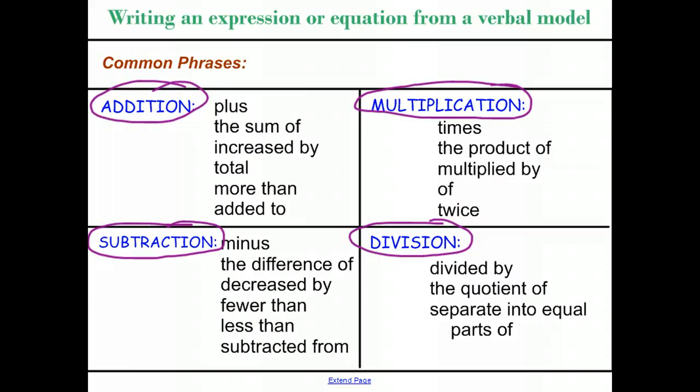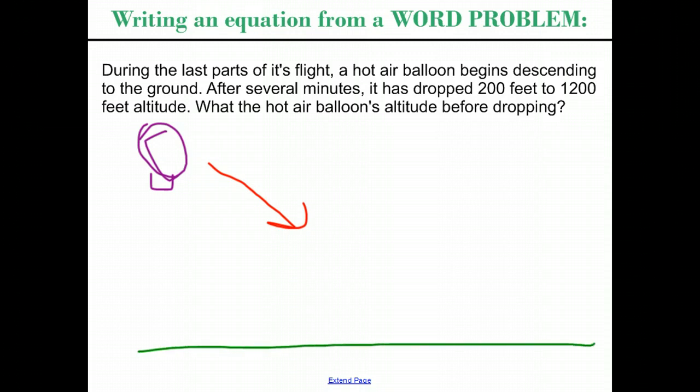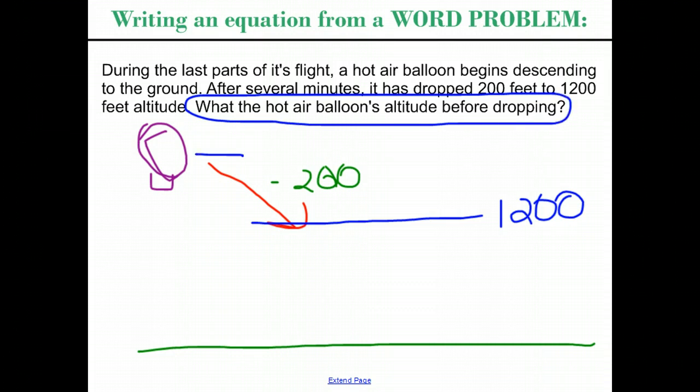But writing from verbal models is one thing. More often, what we're going to be asked to do is write from a word problem. So let's take a look at this one. During the last parts of its flight, a hot air balloon begins descending to the ground. So I'm going to draw a picture here so we can see what's going on. A hot air balloon. And during part of its flight, it begins descending. We'll say the ground is down here. After several minutes, it has dropped 200 feet, so it has dropped by 200, down to an altitude of 1,200. What was its altitude before it began to drop? So we're looking at what is here. Now before we go ahead and solve it, just add the 200 back to 1,200 and get to 1,400, which is true, we need to look at what does this represent? What if I wanted to write an equation here? How can I represent this in an equation, in a mathematical sentence?